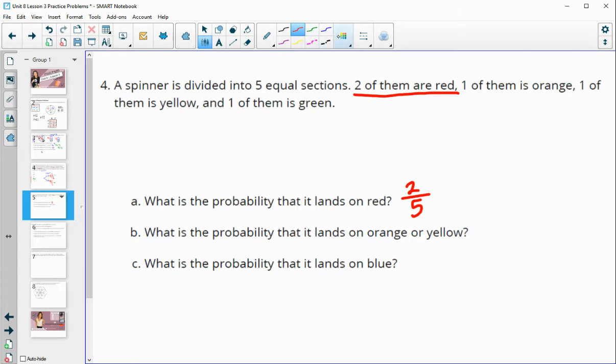Orange or yellow. So orange or yellow. Well, we have one orange and we have one yellow. So that's two spaces, one orange, one yellow out of the five. And what's the probability that it lands on blue? Well, there aren't any blue. The other one is green. So how many blue are there? There are zero blue slots out of five. So the probability that we would land on blue is zero.